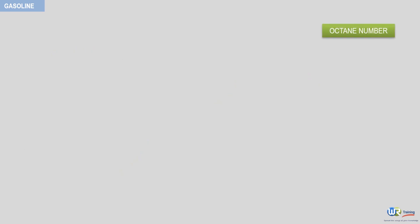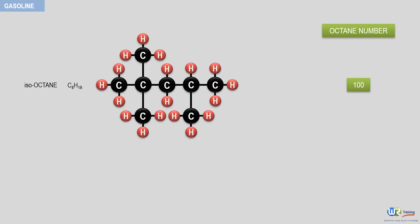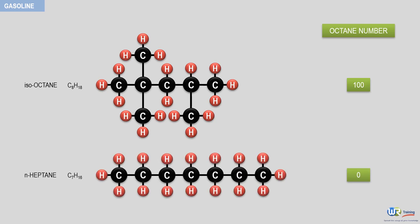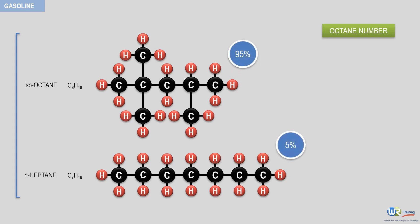It is defined by arbitrarily allocating an octane number of 100 to iso-octane and an octane number of zero to normal heptane, which is an unstable normal paraffin. By this definition, a gasoline product having the same resistance to auto ignition as a mixture of 95 percent iso-octane and 5 percent normal heptane will have an octane number of 95.